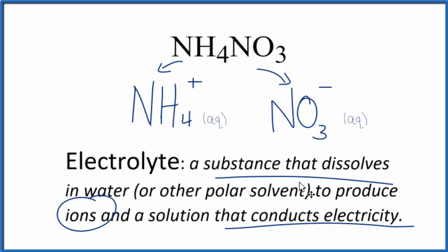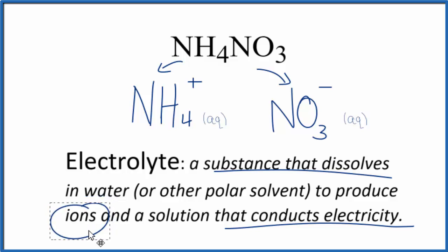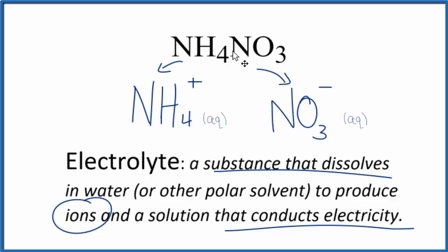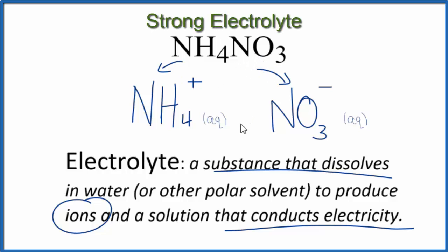Back to our definition: an electrolyte is a substance that dissolves in water, produces ions, and will conduct electricity. So in answer to our question, NH4NO3 — ammonium nitrate — is an electrolyte, and it's a strong electrolyte because it dissociates completely to form ions and will conduct electricity quite well.